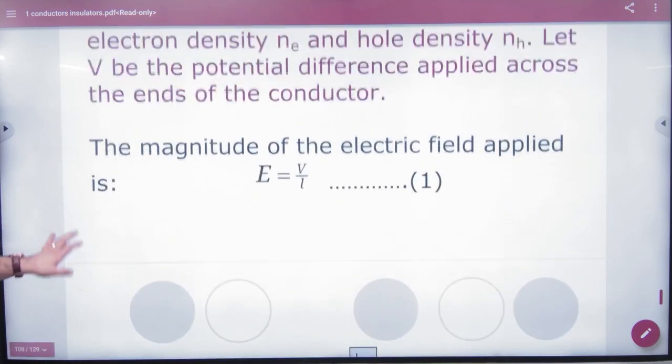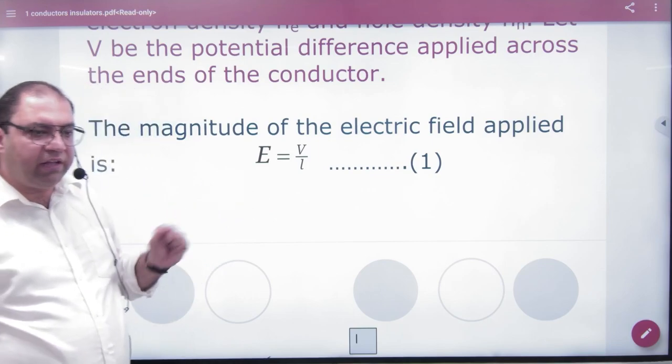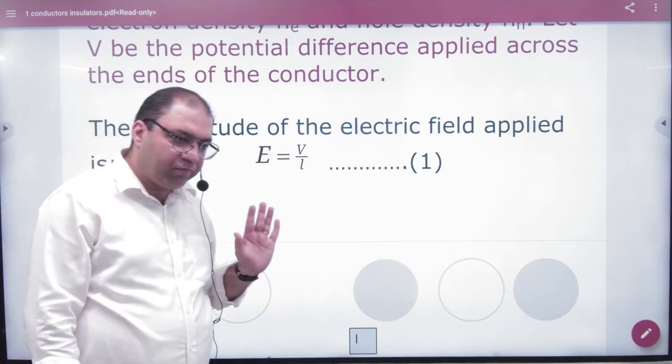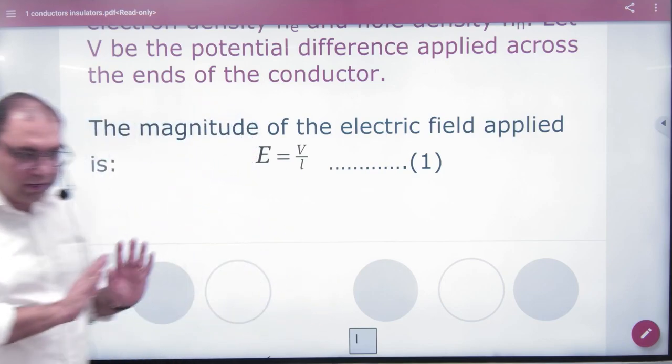In this case, the first result is, I applied E. E is equal to dV by dr. Potential difference V by L. E is equal to V by L. The first step is clear.